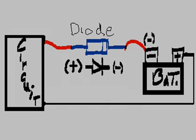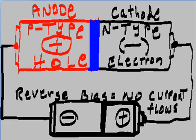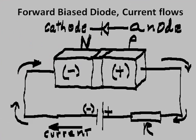Here's another picture showing the negative cathode connected to the negative part of the battery. Here is reverse bias — no current flow. Positive goes to the N-type material, the cathode, and negative goes to the P-type material. No current flows with reverse bias.